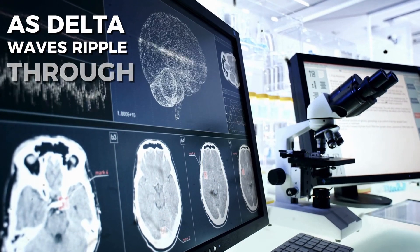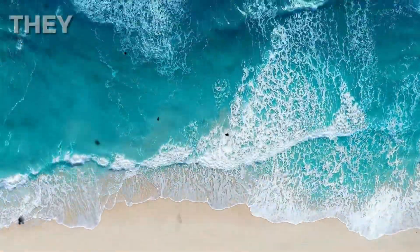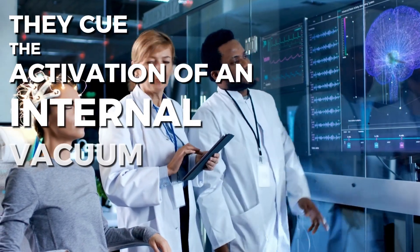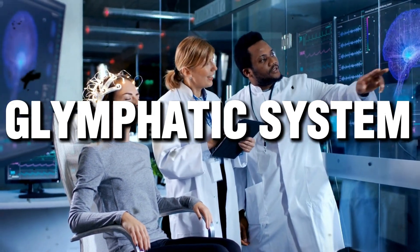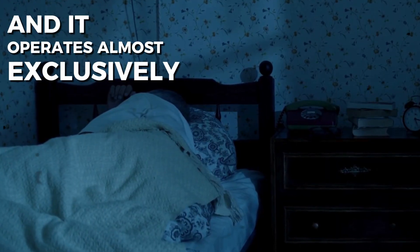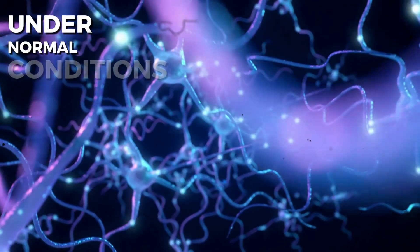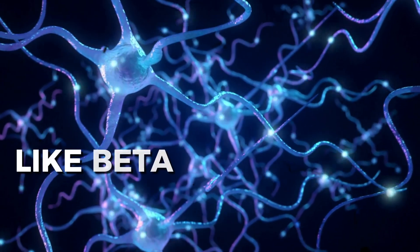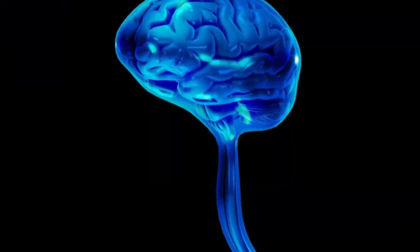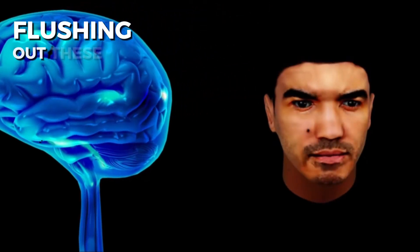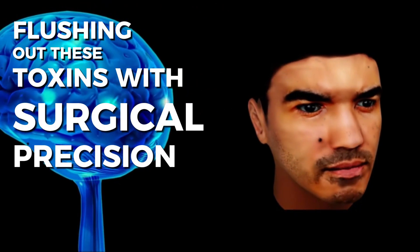As delta waves ripple through your brain like rhythmic ocean tides, they cue the activation of an internal vacuum system that quite literally cleans your brain. It's called the glymphatic system. Under normal conditions, harmful waste like beta amyloid protein builds up in your brain. But during slow-wave sleep, cerebrospinal fluid rushes through neural tissue, flushing out these toxins with surgical precision.